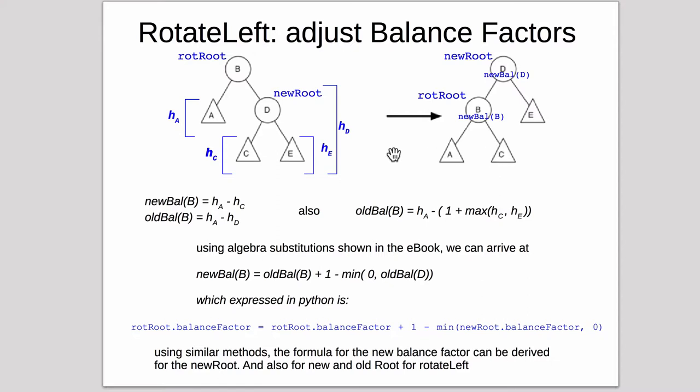And those heights existed in the previous here. And then the old balance of B is equal to HA minus HD. So the old balance of B is the height of HB minus the height HD. So we have these two equations. But we also have the old balance of B is also HA. So the old balance of B is a height of HA minus the right side. And we can express the right side as this is a height of 1 plus whichever this is bigger. So the max of HC or HE. So that's the total height of this subtree. So this is an equation here.